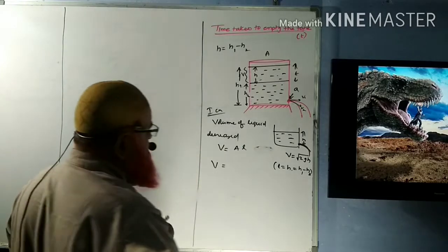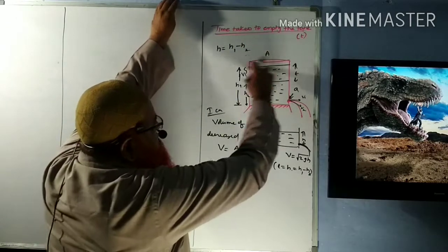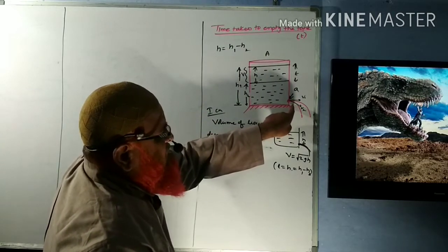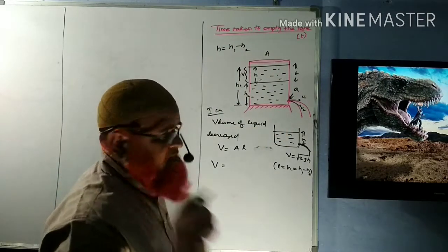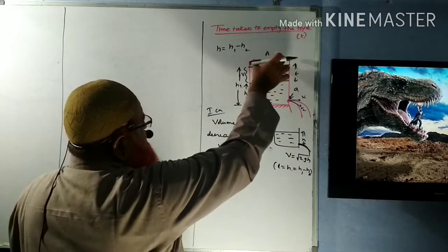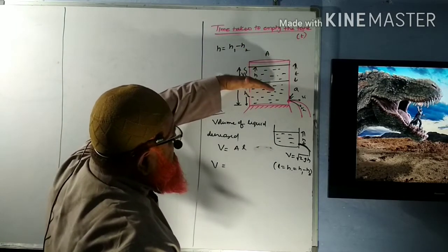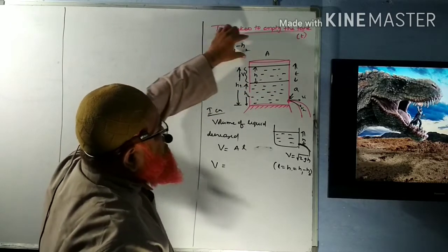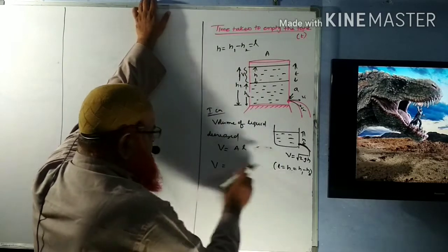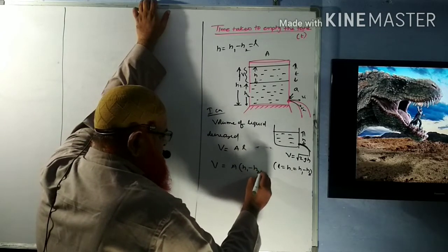We need to find the formula for time taken to decrease the level from H1 to H2. Volume is equal to area into length. The area of the cross-section of the tank is A, and the area of the cross-section of the orifice (the very small hole) is small a. The length is H1 minus H2, so volume equals A into (H1 minus H2).